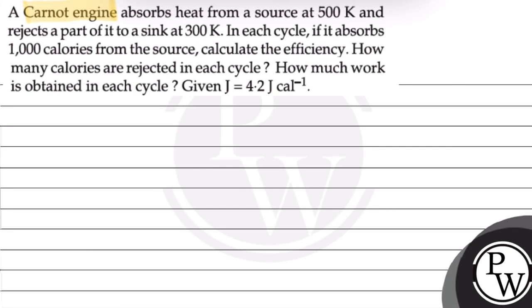The question says: A Carnot engine absorbs heat from a source at 500 Kelvin and rejects a part of it to a sink at 300 Kelvin. In each cycle, if it absorbs 1000 calories from the source, calculate the efficiency. How many calories are rejected in each cycle and how much work is obtained in each cycle?